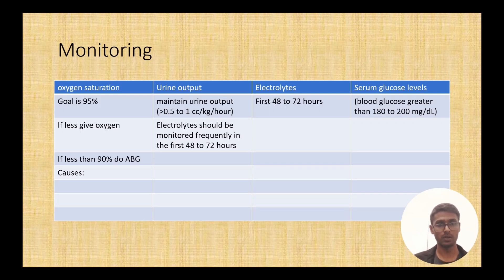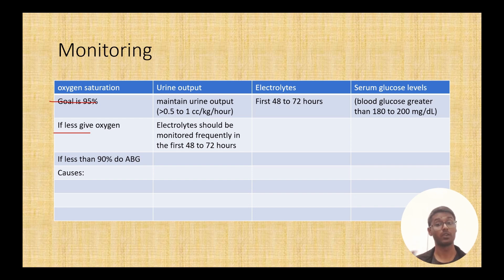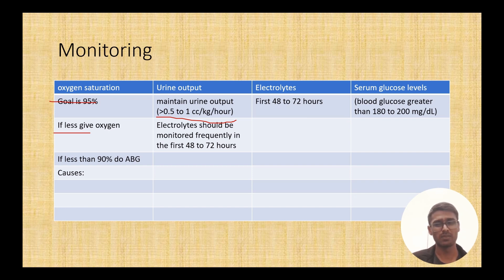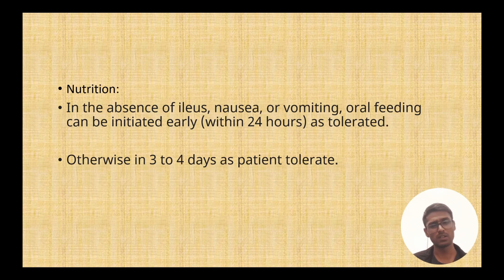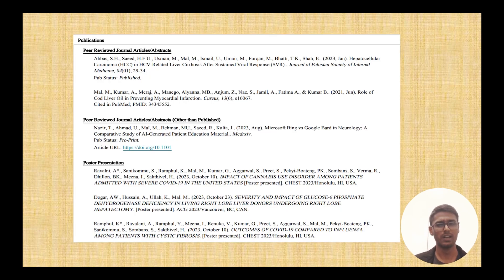Monitoring is very important. Oxygen saturation goal is 95 percent — if less than that, give oxygen; if less than 90, do an ABG right away. Urine output should be at least 0.5 to 1 cc per kg per hour. Check electrolytes every 48 to 72 hours, and serum glucose goal is 140 to 180. Regarding nutrition: after stabilizing, some patients can tolerate oral diet within 24 hours while others may take three to four days.